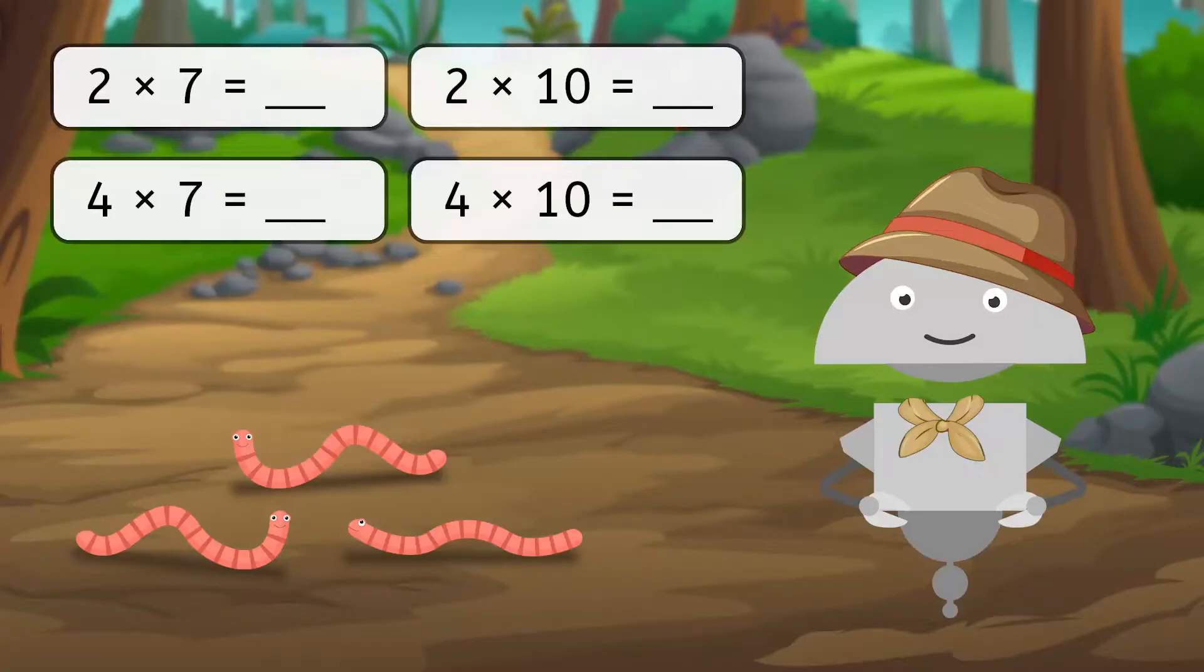Looks like Forrest found some warm-up problems for us to solve. Pause here to solve two times seven, four times seven, two times 10, and four times 10 in your guided notes.